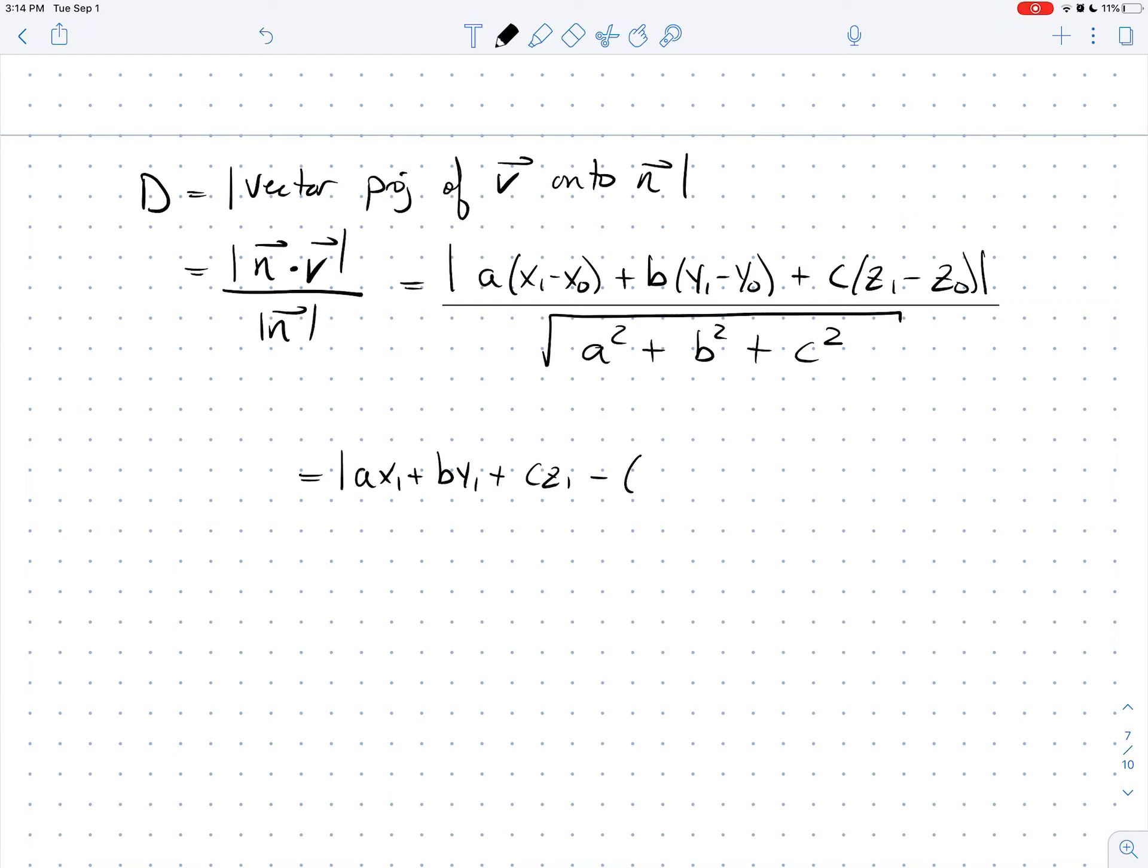Next, I want to go ahead and distribute the A and the B and the C and group everything by the ones, X1, Y1, Z1, and then the naughts. So when we do that, we're going to get the absolute value, AX1 plus BY1 plus CZ1, that's the first part, minus parenthesis, AX naught plus BY naught plus CZ naught, close parenthesis, all over the square root that we just wrote down. All right, so that's that.